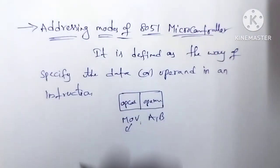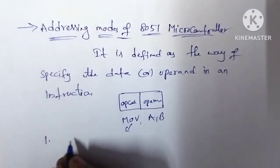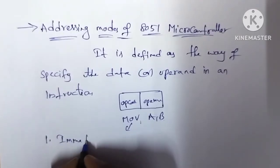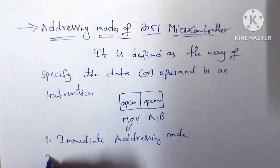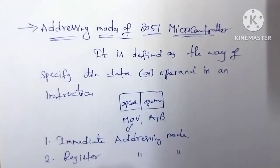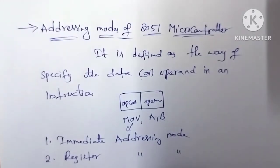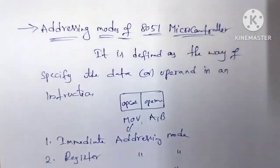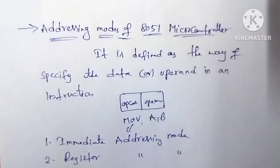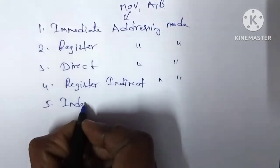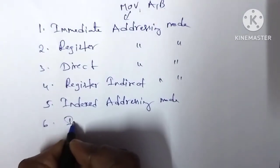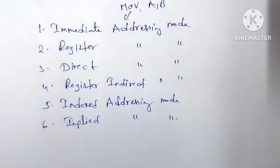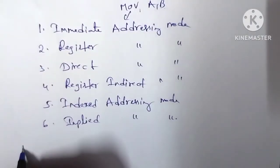There are different types of addressing modes available in the 8051 microcontroller. Those addressing modes are: immediate addressing mode, register addressing mode, register indirect addressing mode, indexed addressing mode, and implied addressing mode. There are five addressing modes available in the 8051 microcontroller.